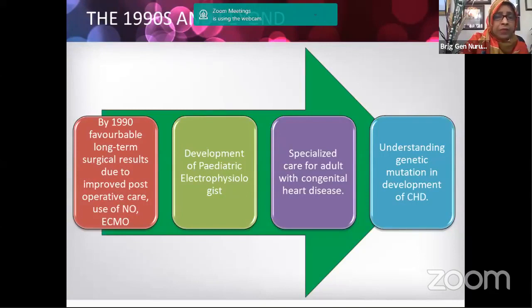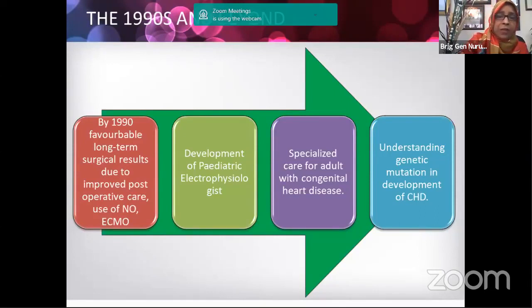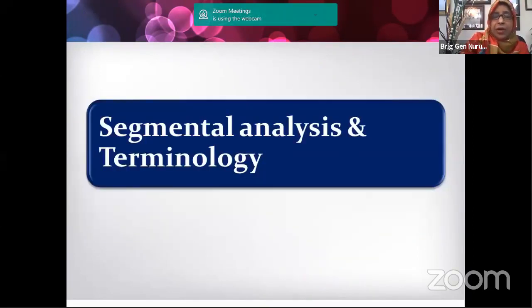Long-term survival after surgery and intervention has improved not only due to skill development among specialists, but also due to innovations like nitric oxide, ECMO, various ventilatory supports, high-flow oxygen, and development of pediatric electrophysiology. Specialized care for adult congenital heart disease (ACHD) is now another important subject, as many adults survive with minor forms of congenital heart disease. Understanding genetic mutations in congenital heart disease is also now very important — genes related to tetralogy of Fallot, pulmonary atresia, and many other conditions are being identified.